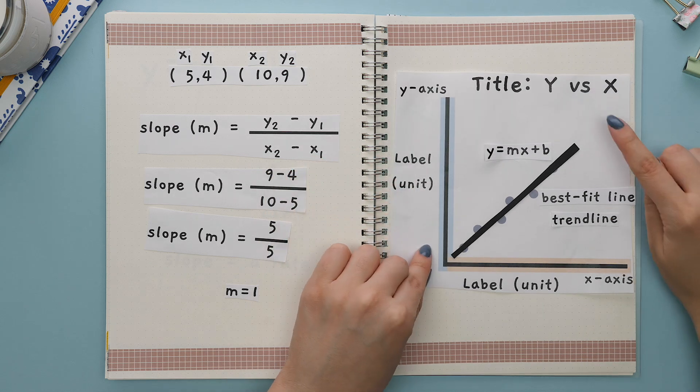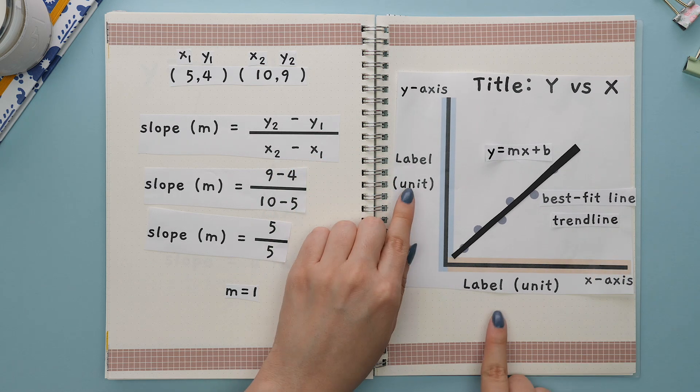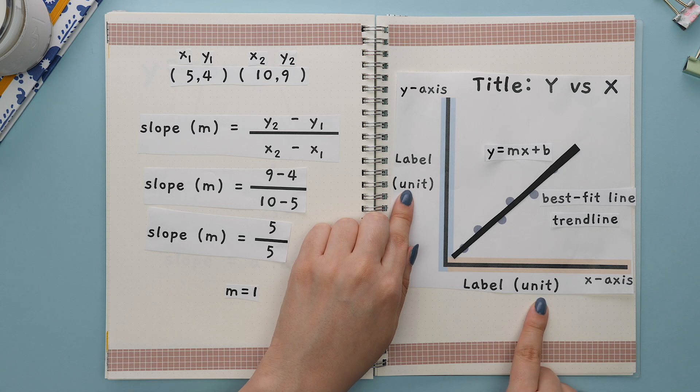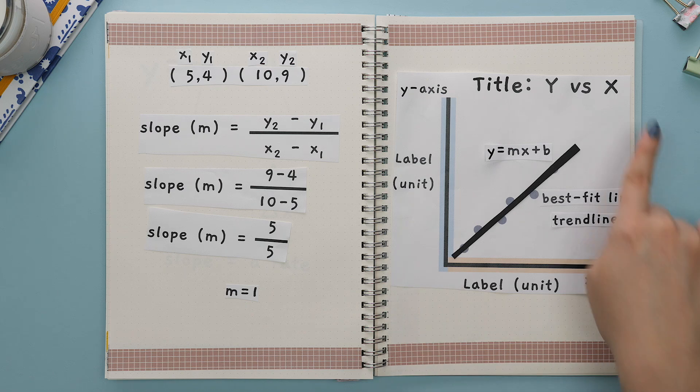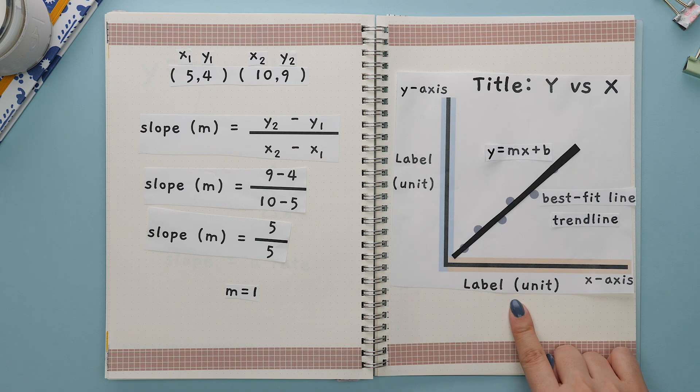always make sure that your graph has a title. Each axis is labeled with the units, the best fit line is shown, and the equation for your trend line is shown. Do this to avoid losing any points on your lab reports.